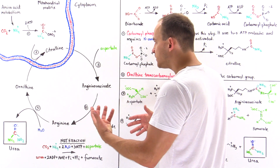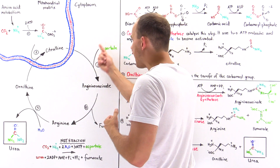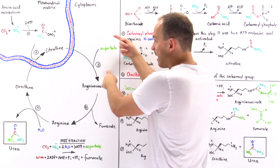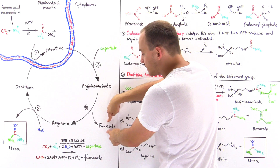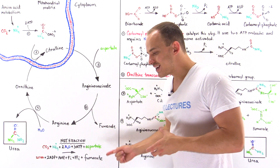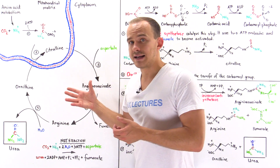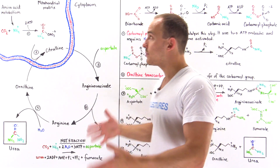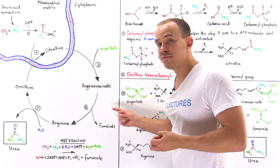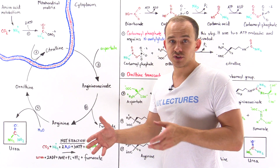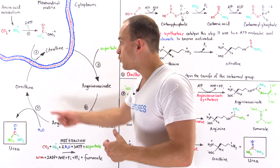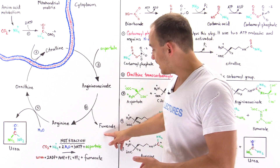In step four, argininosuccinate is broken down into arginine and fumarate. The second amino group from aspartate ends up on arginine, while the carbon skeleton of aspartate becomes fumarate. Fumarate is the important link — the bridge between the urea cycle and gluconeogenesis, the production of glucose. In the liver, fumarate can be converted to malate, then to oxaloacetate, which is used to form glucose.